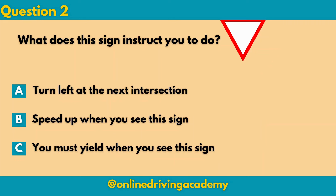Question 2: What does the sign instruct you to do? In the last video I reminded you that an upside-down triangle is telling you to yield. Now what does that mean? That means you have to come to a very low speed without stopping if there are no cars at an intersection. If there are cars at that intersection, you will have to come to a complete stop.